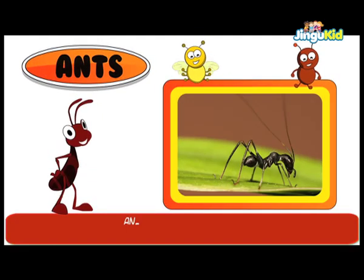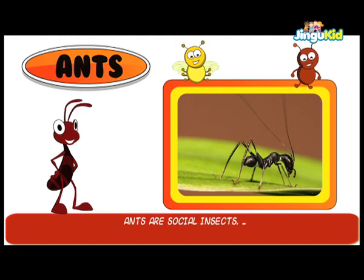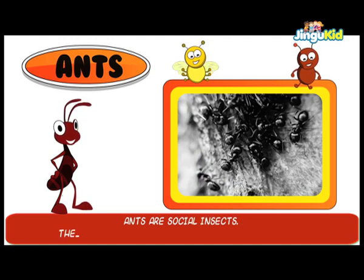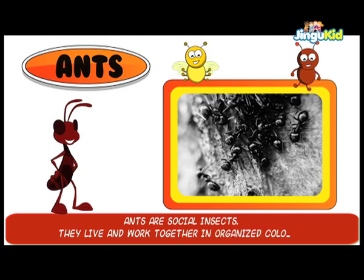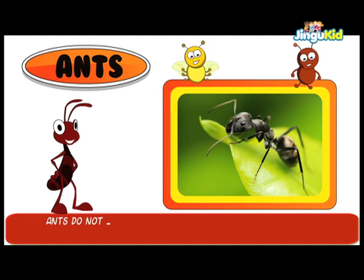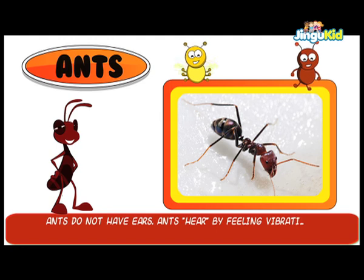Ants are social insects. They live and work together in organized colonies. Ants don't have ears. Ants hear by feeling vibrations in the ground through their feet.